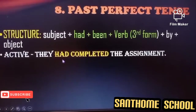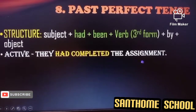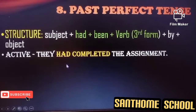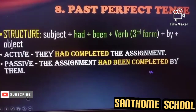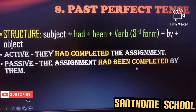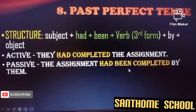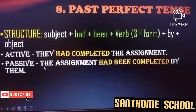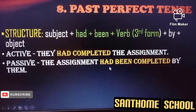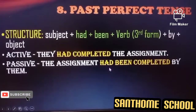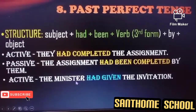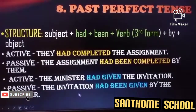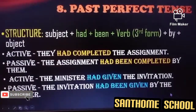Example. Active voice: 'They had completed the assignment.' 'Had completed' — past perfect. In passive voice: 'The assignment had been completed by them.' Note that without considering whether the subject is singular or plural, with all subjects we use 'had' itself. That's a very easy task. Second example: 'The minister had given the invitation.' In passive voice: 'The invitation had been given by the minister.'